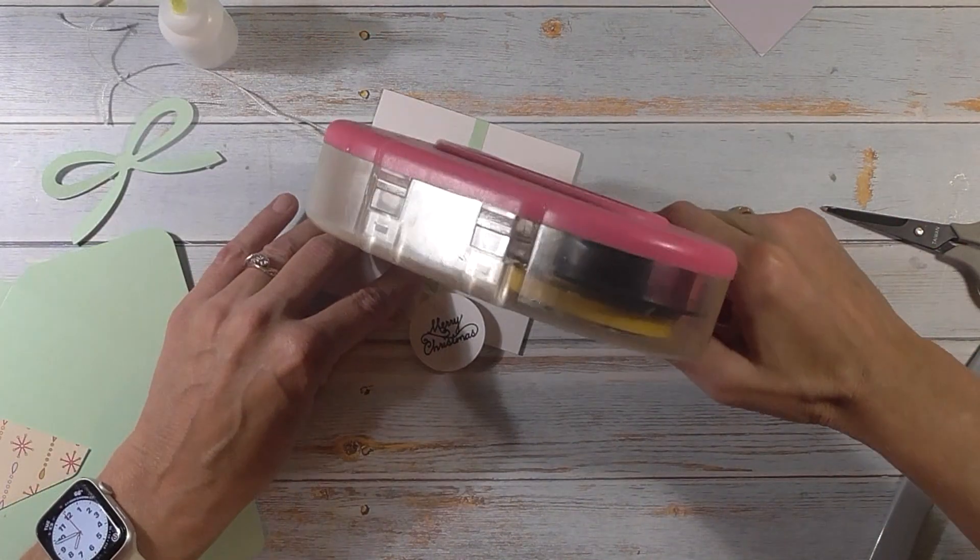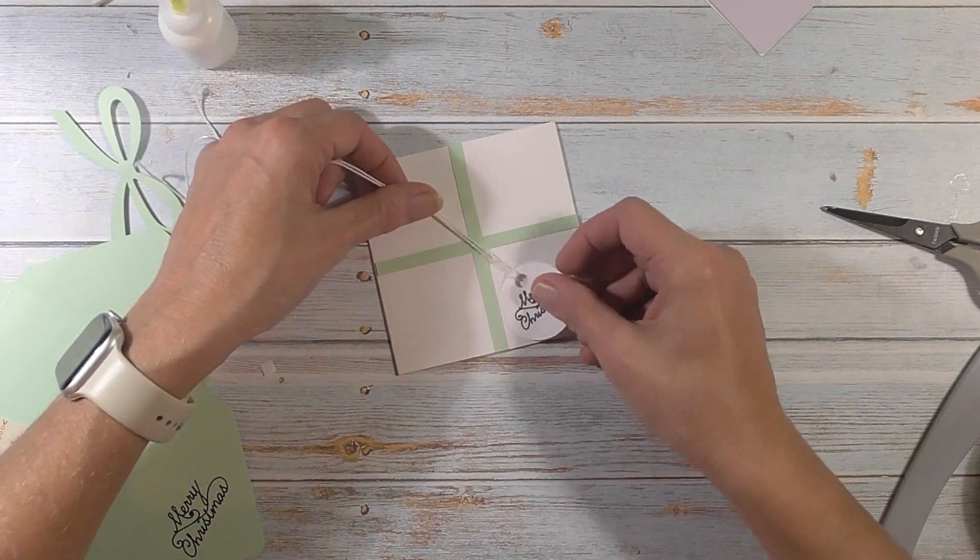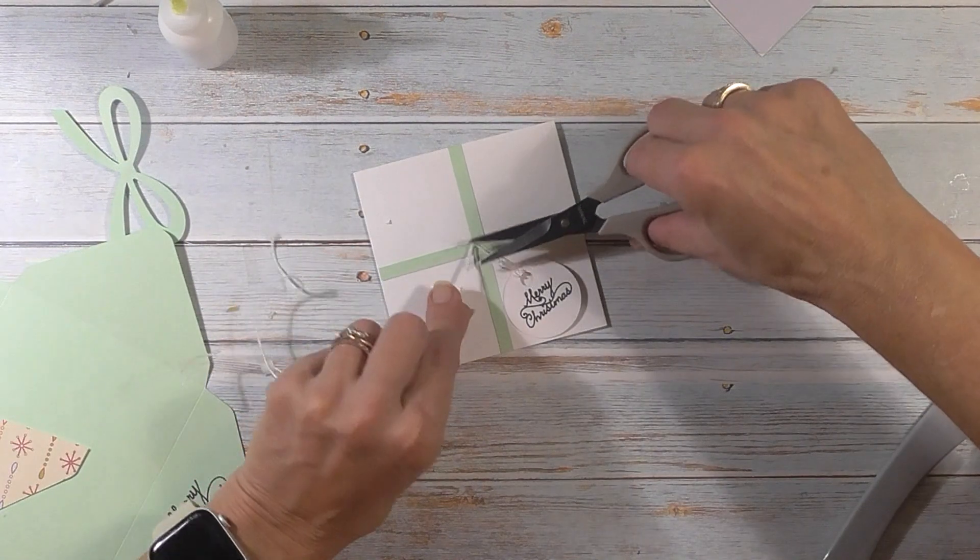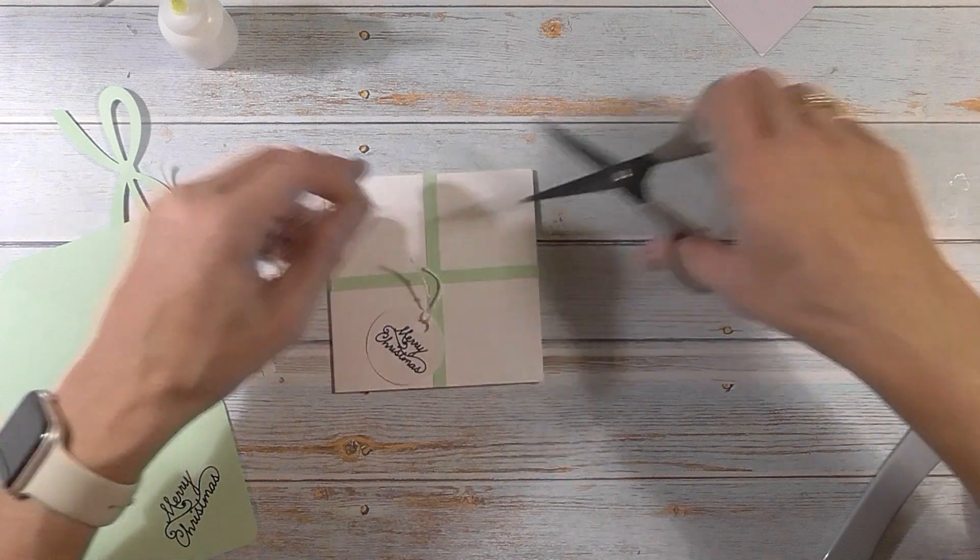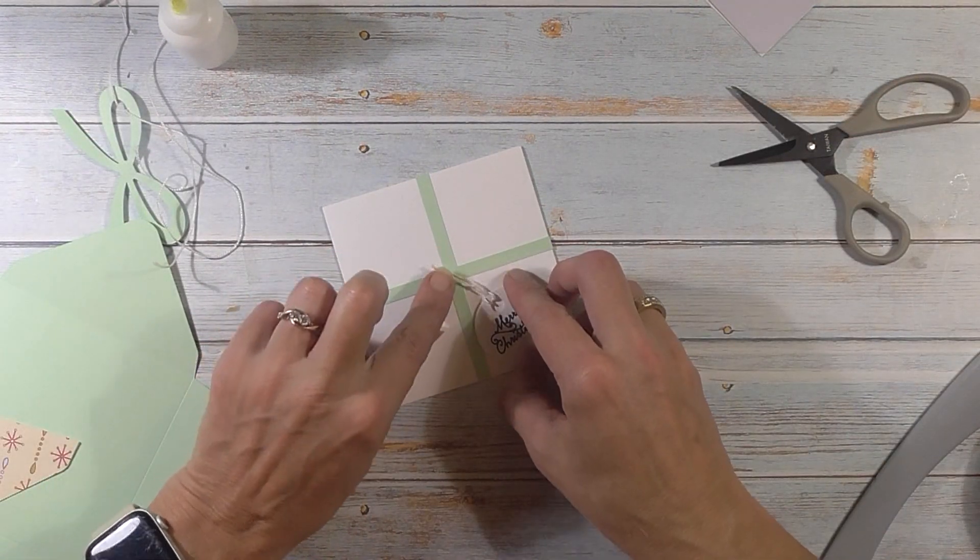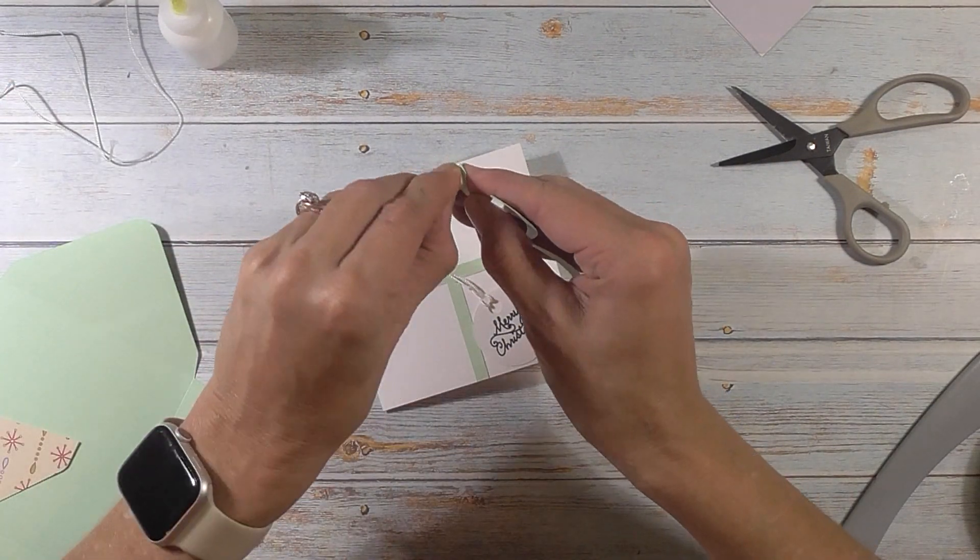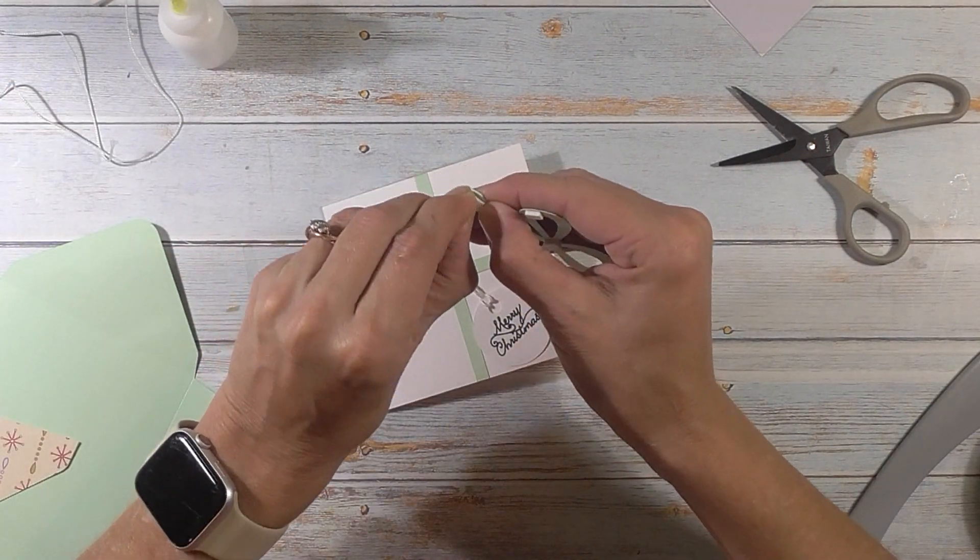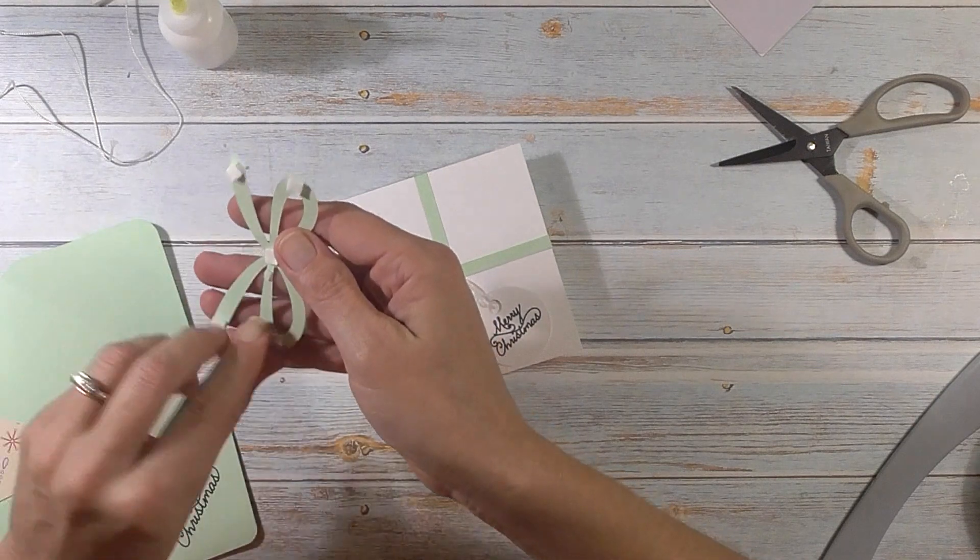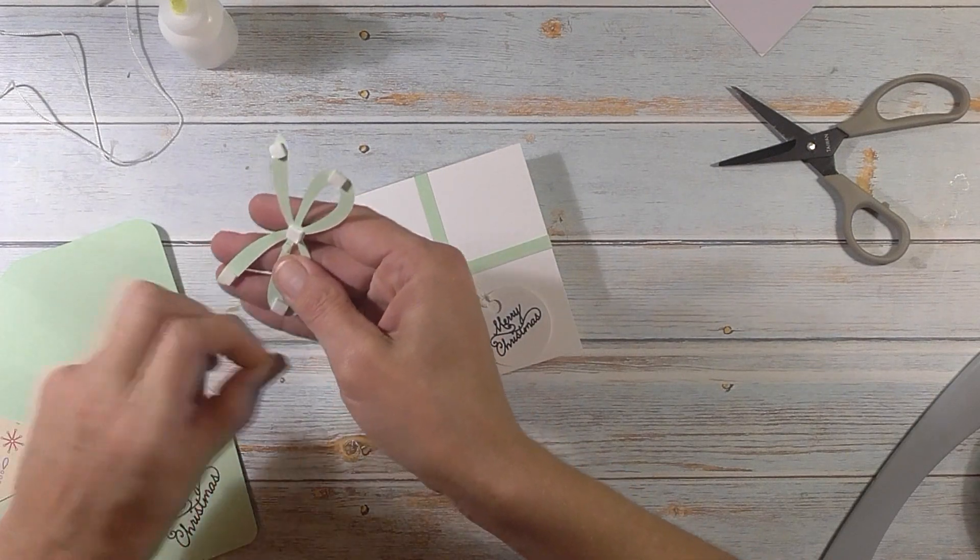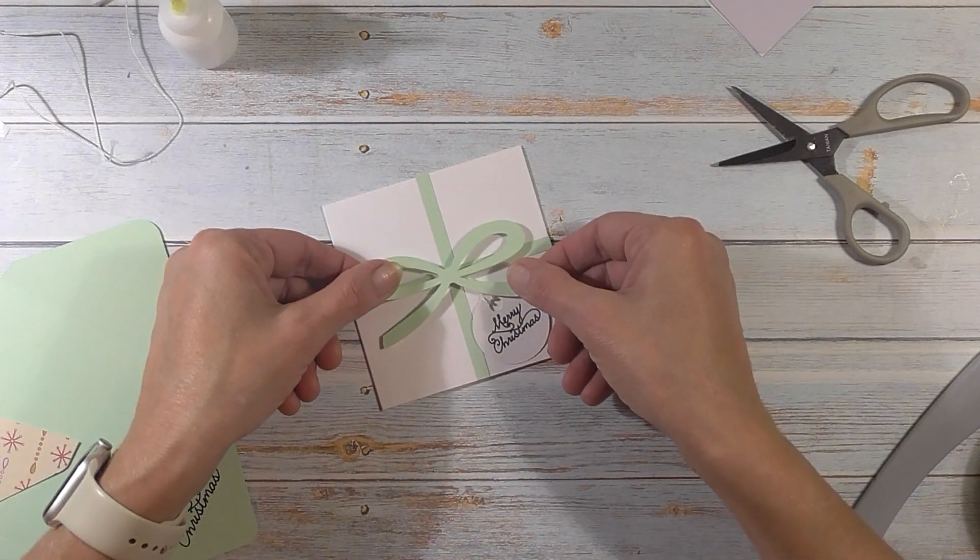Actually I'm going to take a little bit of adhesive and put that right there. I'm going to trim off the extra of my twine. So you only need like a little bit of twine. So I'm putting that in that glue. Then take the backing off our foam squares. And that's going to hide that raw edge of the twine.